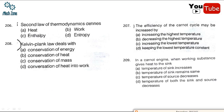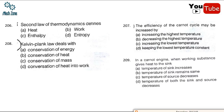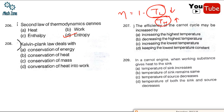Question 206: the second law of thermodynamics defines entropy. The efficiency of the Carnot cycle may be increased by either decreasing T_low or increasing T_high. The options given are: increasing the highest temperature (A), decreasing the highest temperature, increasing the lowest temperature, keeping the lowest temperature constant. The correct option is A — increasing the highest temperature. However, for practical betterment we reduce the lowest temperature since T_high has physical limits.